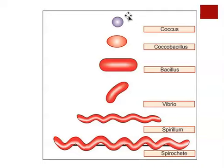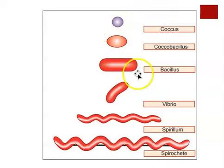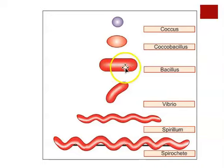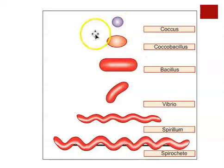The coccus is the smallest of the prokaryotic cells, generally between 0.5 and 2 micrometers in diameter. The coccobacillus is simply an intermediate shape between the coccus and the bacillus, or the rod. In common language, we refer to this elongated shape as a rod, and the coccobacillus shape is something of an oval, or a very short, stubby rod.